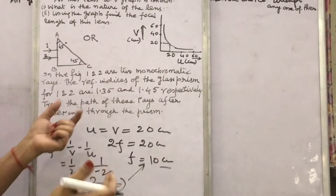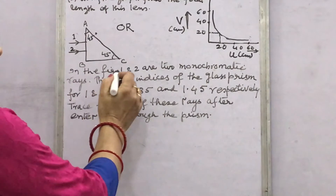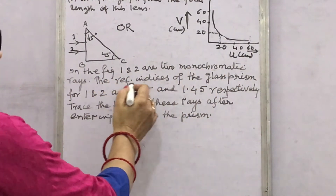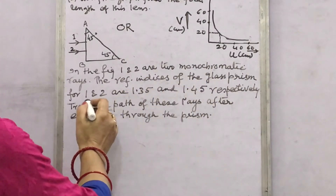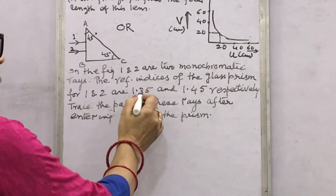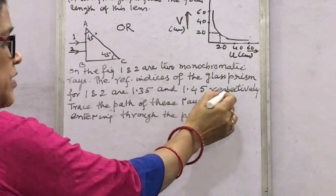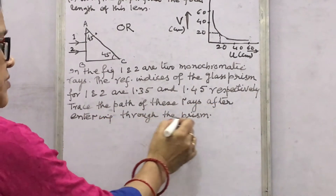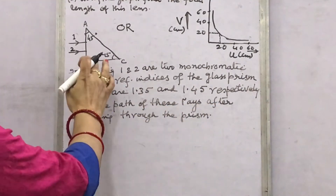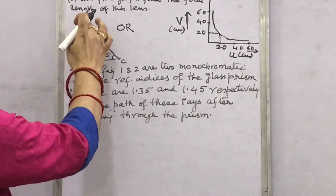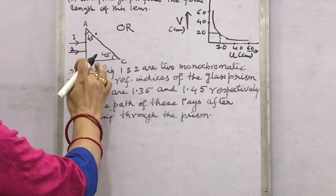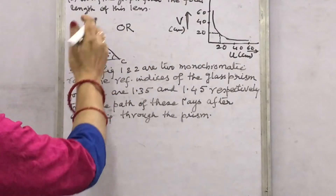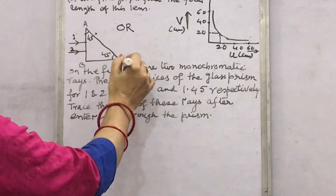Now the choice question. In the figure, rays 1 and 2 are two monochromatic rays. The refractive indices of the glass prism for these rays are 1.35 and 1.45 respectively. Trace the path of these rays after entering through the prism. Rays 1 and 2 are perpendicular to the surface AB, so they will enter directly and come to the surface AC.